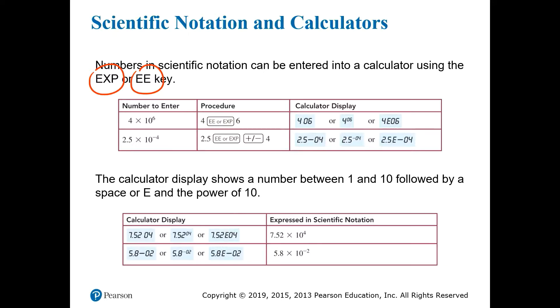So, to enter 4 times 10 to the 6th power, for example, you first enter the 4, then you press exp or ee, depending on your calculator, and then you put in just the 6 and you hit enter. For 2.5 times 10 to the minus 4, you enter the 2.5, followed by the exp or the ee key, followed by the plus minus sign to make the exponent negative, and then finally the 4.